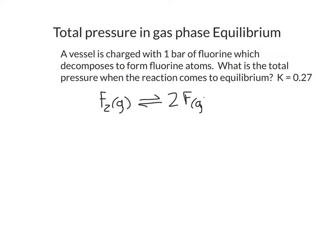Fluorine in the gas phase is a diatomic, so diatomic fluorine forms two fluorine atoms in the gas phase. The equilibrium constant for this equilibrium is equal to 0.27. The vessel is charged with one bar of fluorine initially, and I don't have any fluorine atoms because I have not put any fluorine atoms in at the beginning of the reaction.